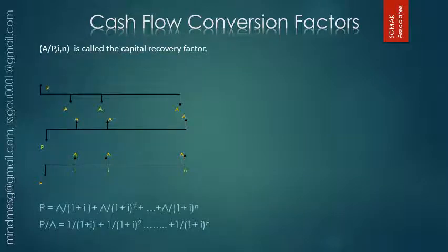A/P(i,n) is called the capital recovery factor because P is in the denominator — you can think of P as the loan the bank has given you. This factor gives you the annuity payment the bank will ask you to pay to recover the capital, which is why it is called the capital recovery factor. It is used to convert how much your monthly payment will be when you take a loan from a bank, converting present value to future annuity payments.